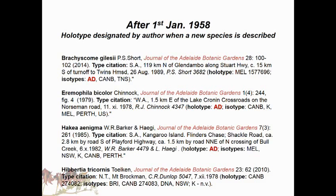Here are four species described by current botanists involved with the Adelaide Botanic Gardens, published in the Journal of the Adelaide Botanic Gardens. You can see 'AD holotype' - meaning we have a type specimen in the herbarium - and the author has chosen the type specimen in that case.